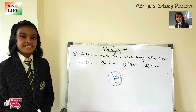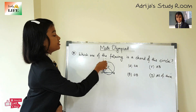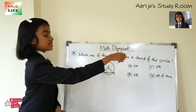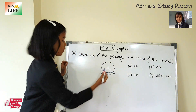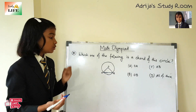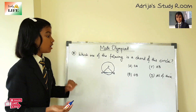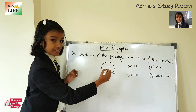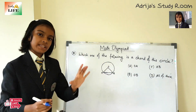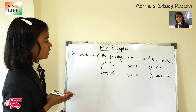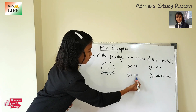The answer is C. Let's solve the next question: which one of the following is a chord of this circle? You can see this is a circle with three line segments: OA, OB, and AB. We have to find which one is a chord. A chord is formed when we take any two points of the circumference and join them.